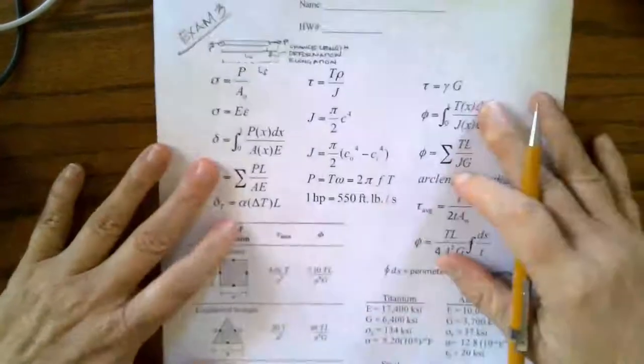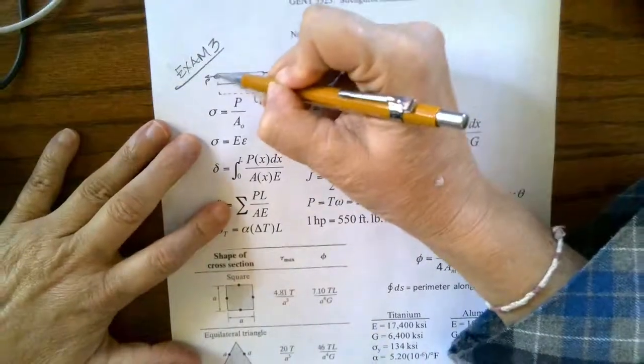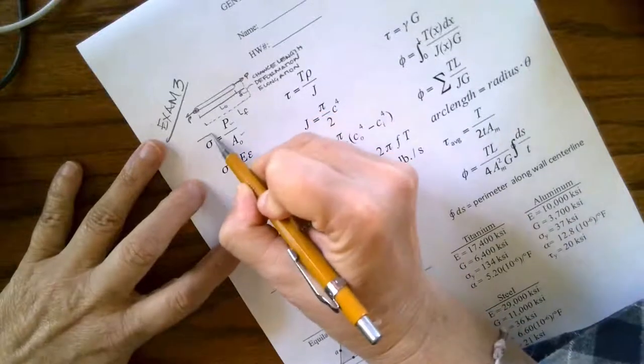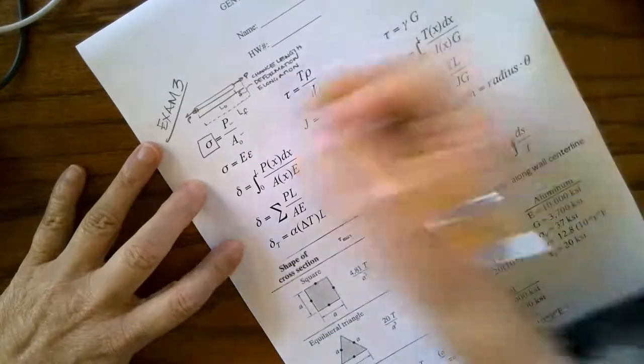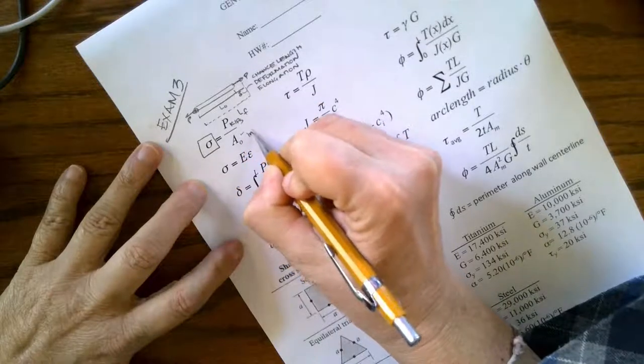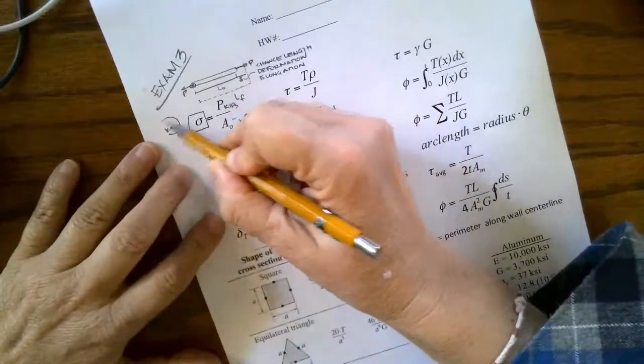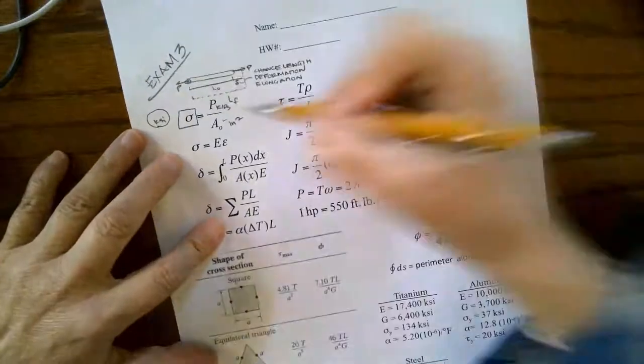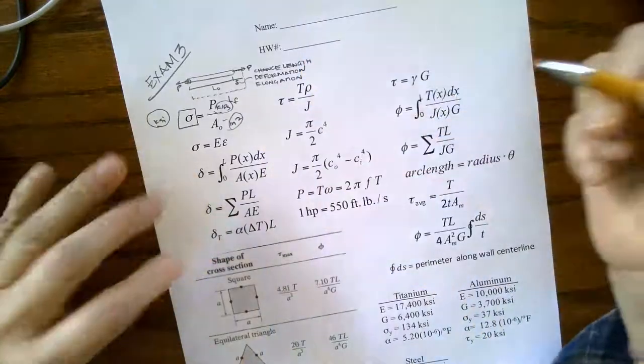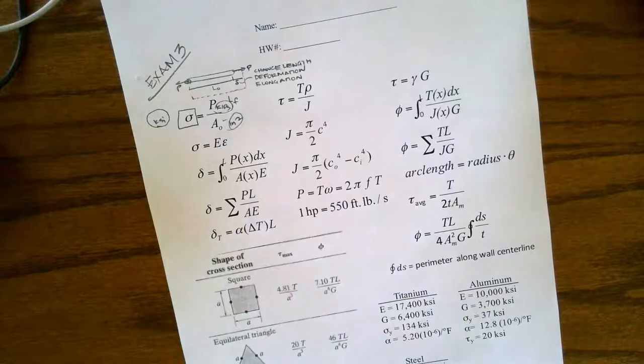I have a force P acting over a cross-sectional area, and I'm going to end up with a normal stress. If this is in kips and this is an inch squared, this is in KSI. Stress is always in units of pressure, forces are always in units of kips, and area is always in units of a length squared.